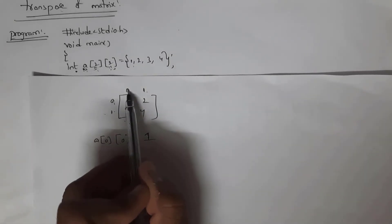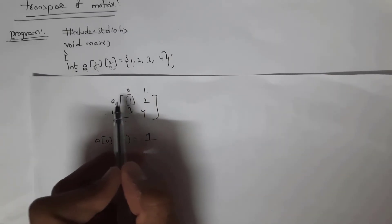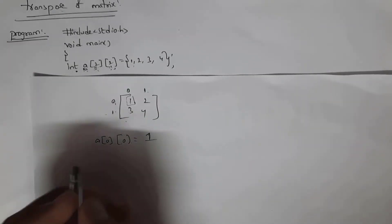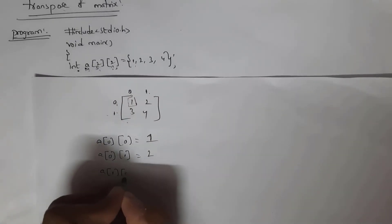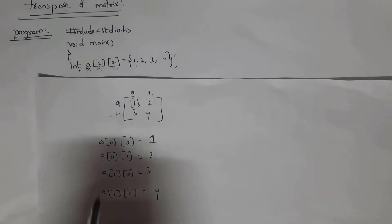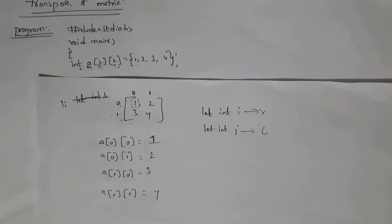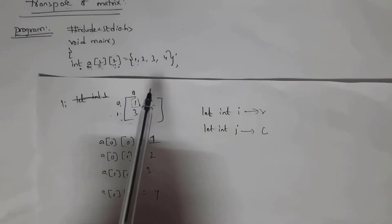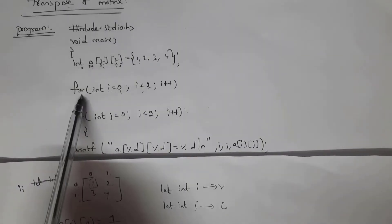a[0][0] means the value in the first row and first column, which will be printed as one. a[0][1] is the value in the first row, second column, printed as two. a[1][0] equals three and a[1][1] equals four. Let int i represent rows and int j represent columns. There are two rows and two columns, both starting from zero and ending at one.